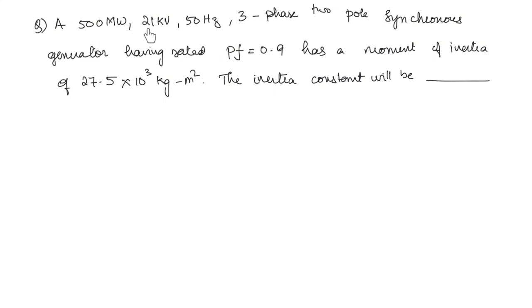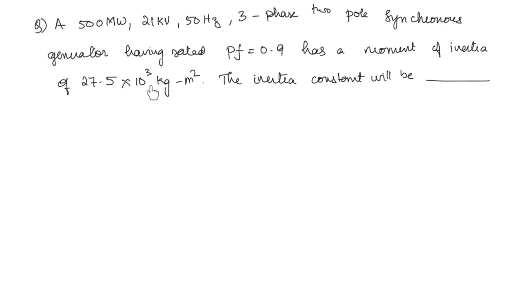A 500 megawatt, 20 kilovolt, 50 hertz, 3-phase, 2-pole synchronous generator having rated power factor equal to 0.9 has a moment of inertia of 27.5 × 10³ kg·m². The inertia constant will be?